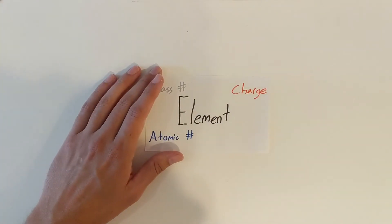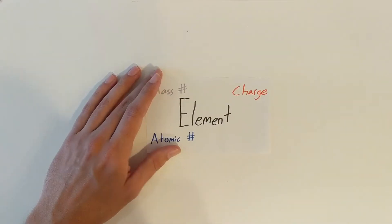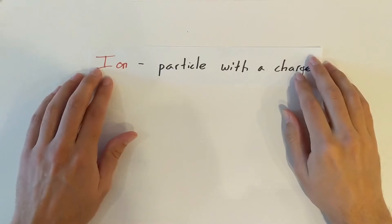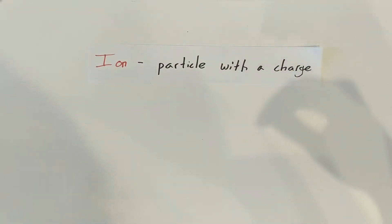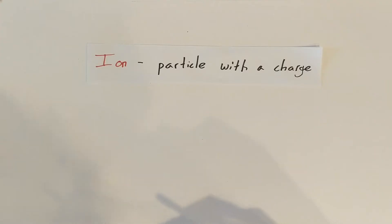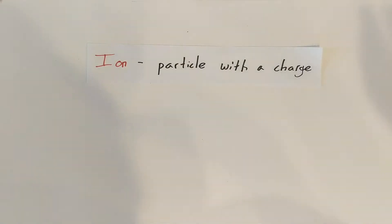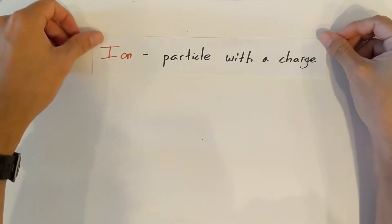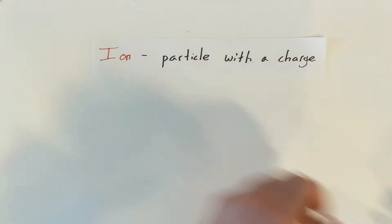I'm going to start here by going over ions and we're going to be going in a little bit more detail than last week. An ion is just a particle with a charge. Specifically in this unit, we're going to be talking about atoms with a charge, but there could also be some molecules with a charge and we'll be talking about that later in the year. So an ion is any particle with a charge.